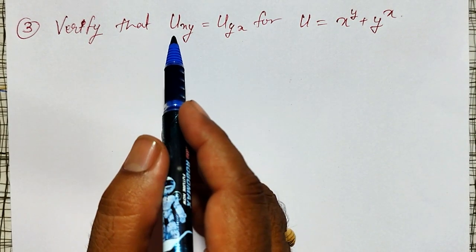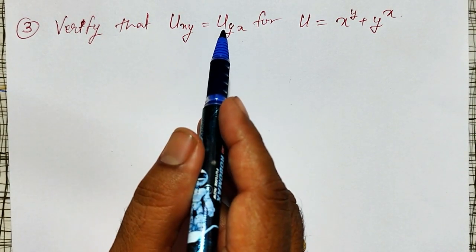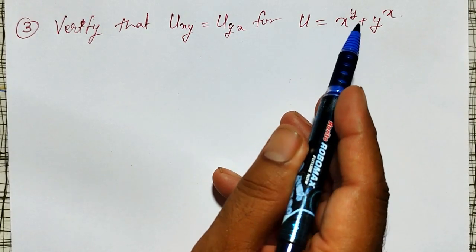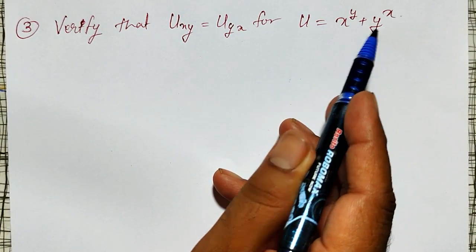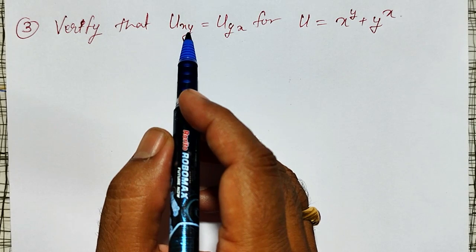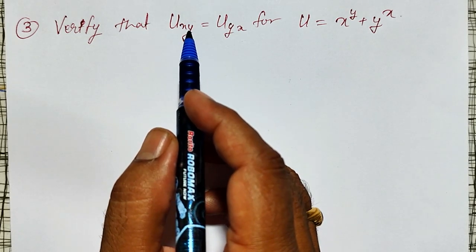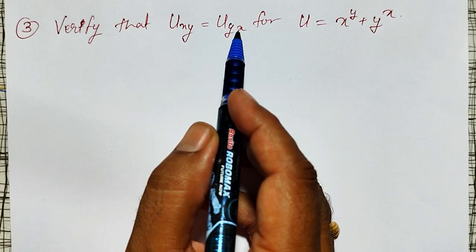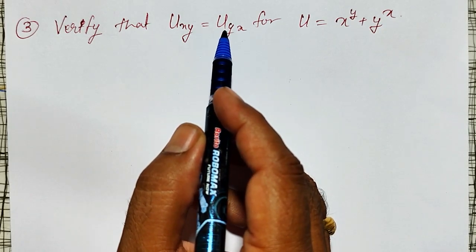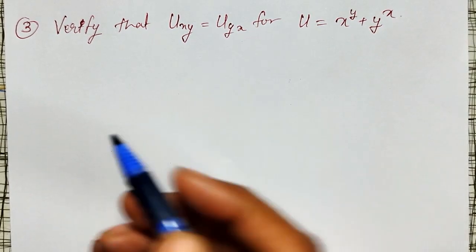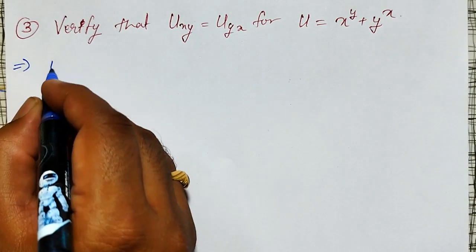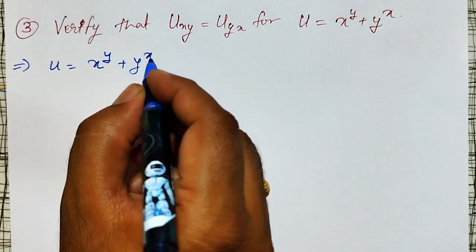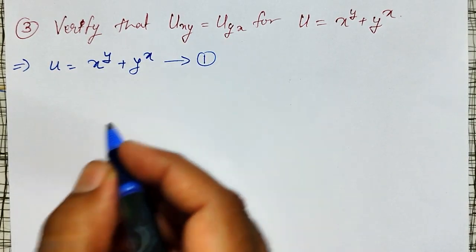I am going to verify that u_xy equals u_yx for u equal to x raised to y plus y raised to x. u_xy is a second order partial derivative, first with respect to y, then with respect to x. And u_yx is first with respect to x, then with respect to y. First, let me consider u equal to x raised to y plus y raised to x. Call this equation number one.